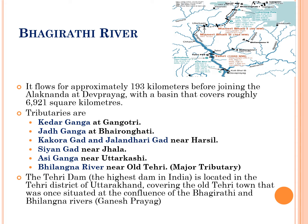The Bhagirathi river is joined by its tributaries in order from the source: Kedar Ganga at Gangotri, Jad Ganga at Bairangati, Kakora Guard and Jalandhari Guard near Harsil, Sian Guard near Jhala, Asi Ganga near Uttarkashi, and Bilangna River near Old Tehri. Bilangna is the major tributary of Bhagirathi. The Tehri Dam, the highest dam in India, is located in Tehri district of Uttarakhand, covering the old Tehri town at the confluence of Bhagirathi and Bilangna rivers, also known as Ganesh Prayag.